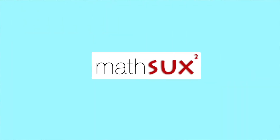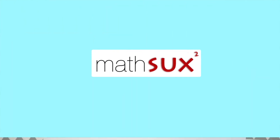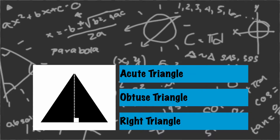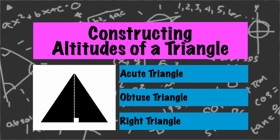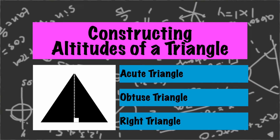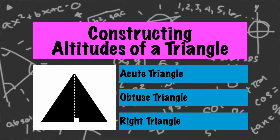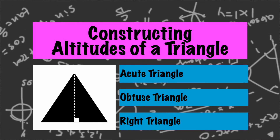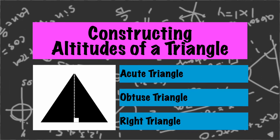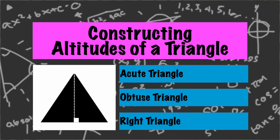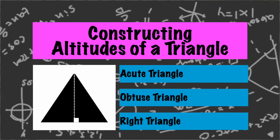Hi everyone and welcome to Math Sucks. This video is going to help you pass geometry. We're going to look at how to construct the altitudes of a triangle by examining an acute triangle, an obtuse triangle, and a right triangle. Let's do this one triangle at a time.